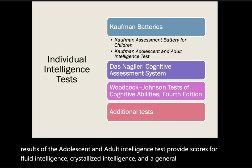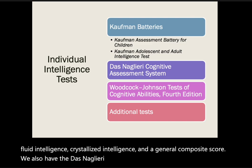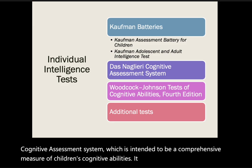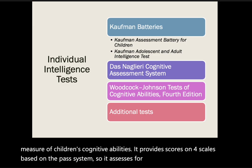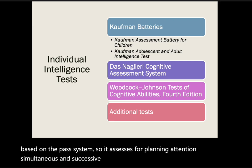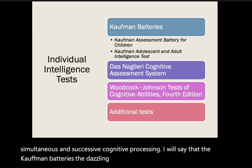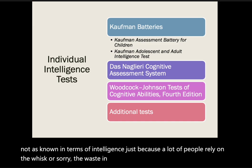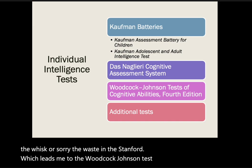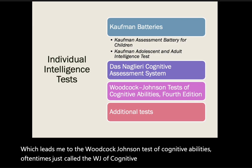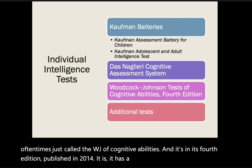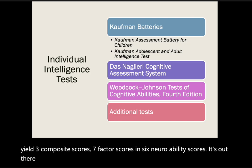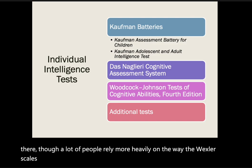The DAS Naglieri Cognitive Assessment System is intended to be a comprehensive measure of children's cognitive abilities, providing scores on four scales based on the PASS system: planning, attention, simultaneous, and successive cognitive processing. The Kaufman batteries, the DAS Naglieri, and the Woodcock-Johnson are not as widely known as the WAIS and the Stanford-Binet. The Woodcock-Johnson Test of Cognitive Abilities is in its fourth edition published in 2014, with 20 intelligence tests yielding three composite scores, seven factor scores, and six narrow ability scores — though most practitioners rely more heavily on the Wechsler scales and Stanford-Binet.